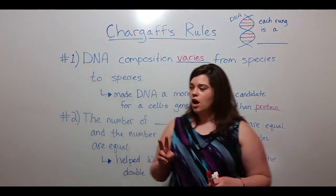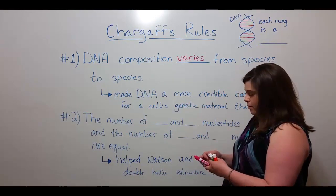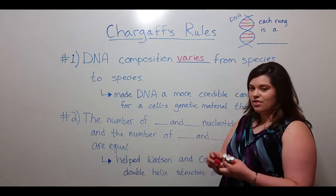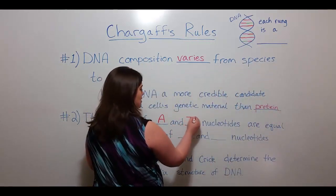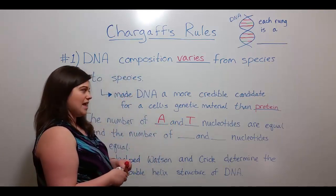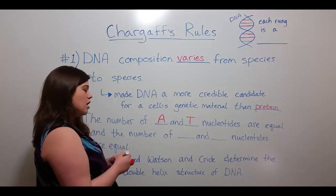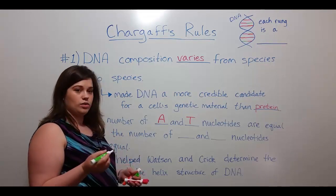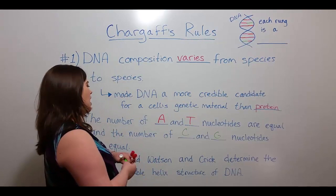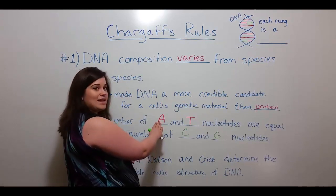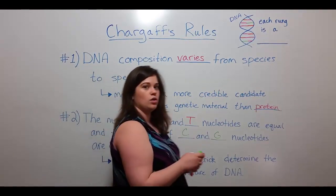Rule number two of Chargaff's rules is probably the one you're more familiar with. It states that the number of adenine and thymine nucleotides — A and T — are equal in a species' DNA, and also that the number of cytosine and guanine nucleotides are equal in a species' DNA. That means there were as many adenines as there were thymines, and as many cytosines as there were guanines.